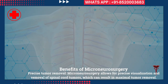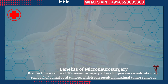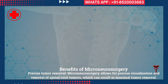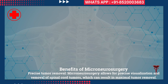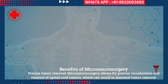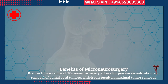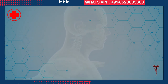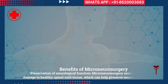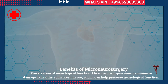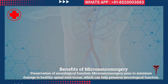Intraoperative monitoring, such as neurophysiological monitoring, may be used to minimize the risk of neurological damage during surgery. Benefits of micro neurosurgery — precise tumor removal: micro neurosurgery allows for precise visualization and removal of spinal cord tumors, which can result in maximal tumor removal.